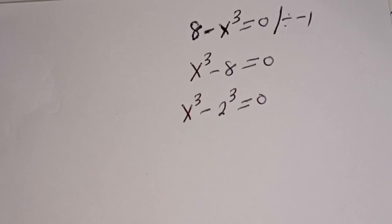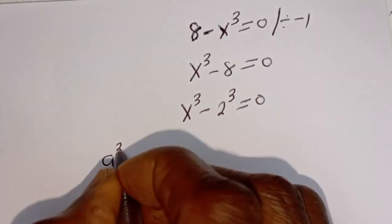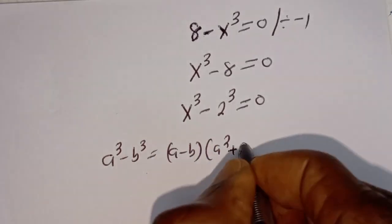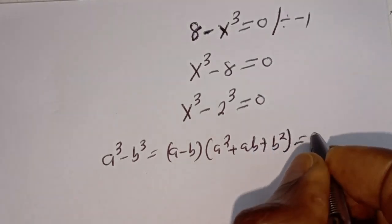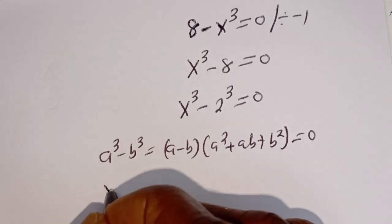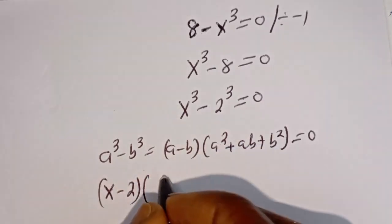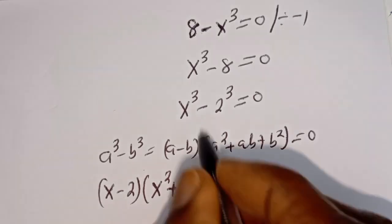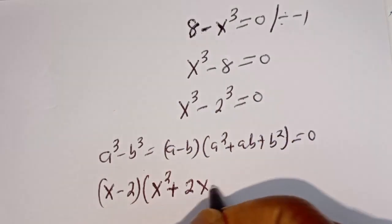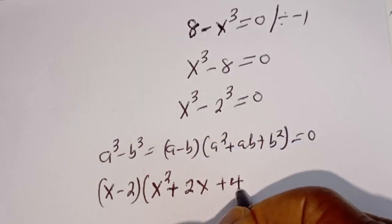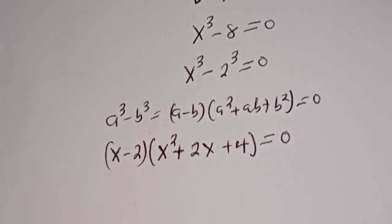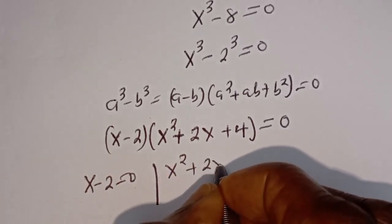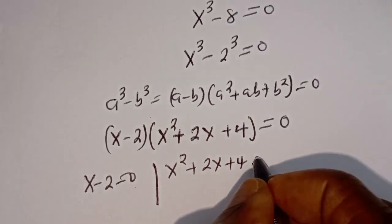We apply the same difference of cubes rule. If you have a to the power of 3 minus b to the power of 3, this is equal to a minus b bracket a squared plus ab plus b squared, is equal to 0. Then from here we have s minus 2, bracket s squared plus 2s plus b squared, that is 4, is equal to 0.